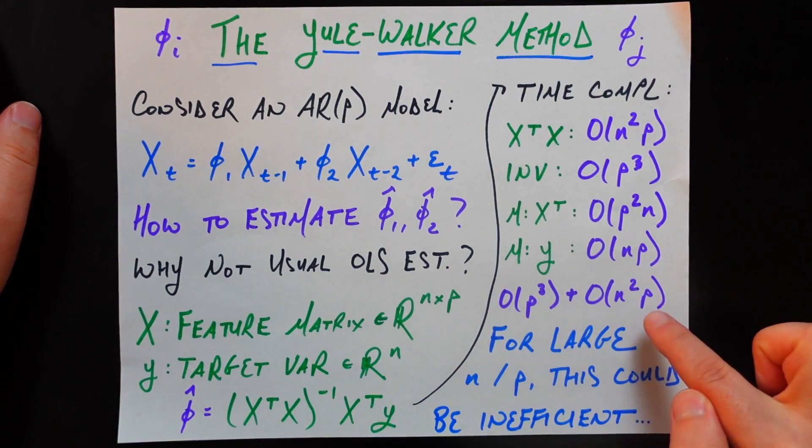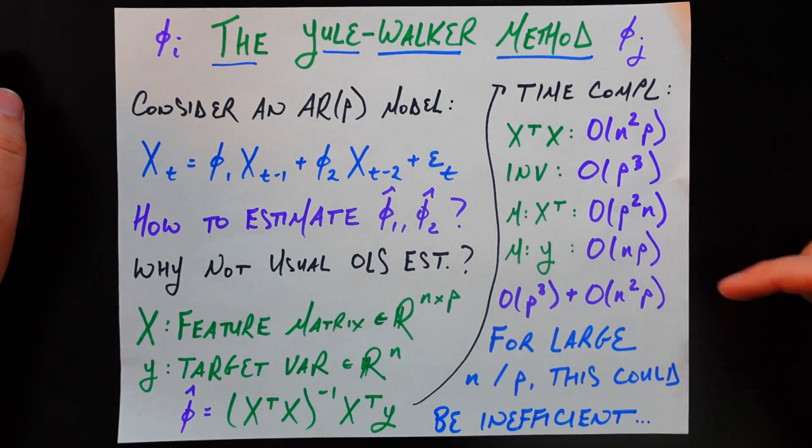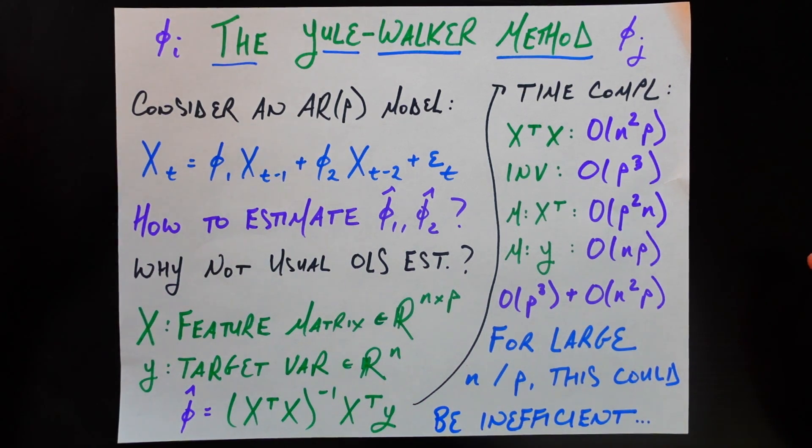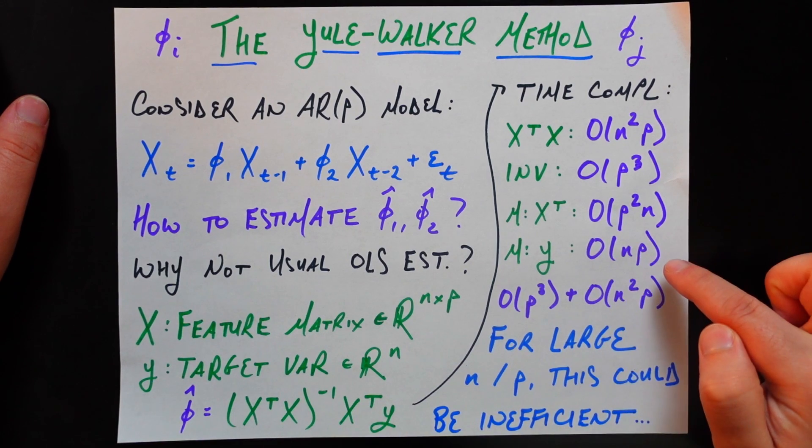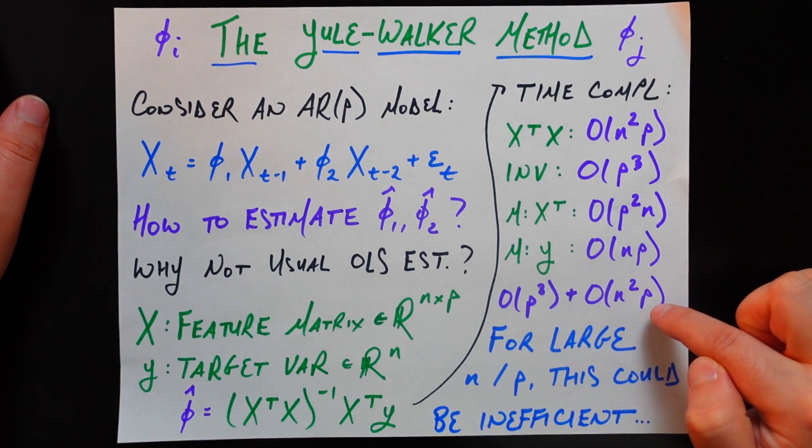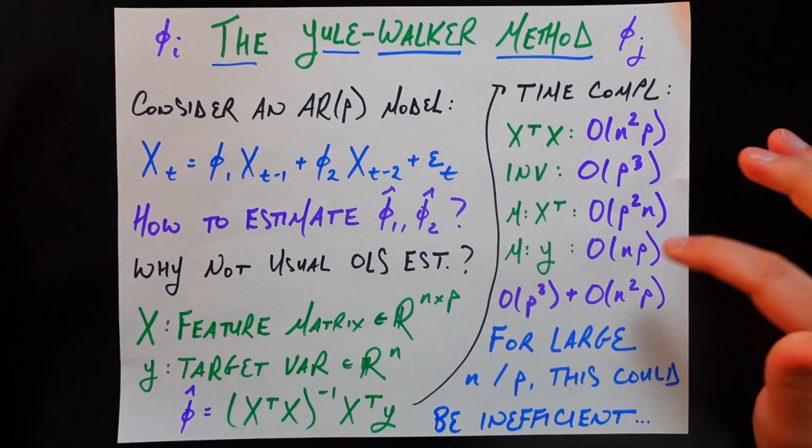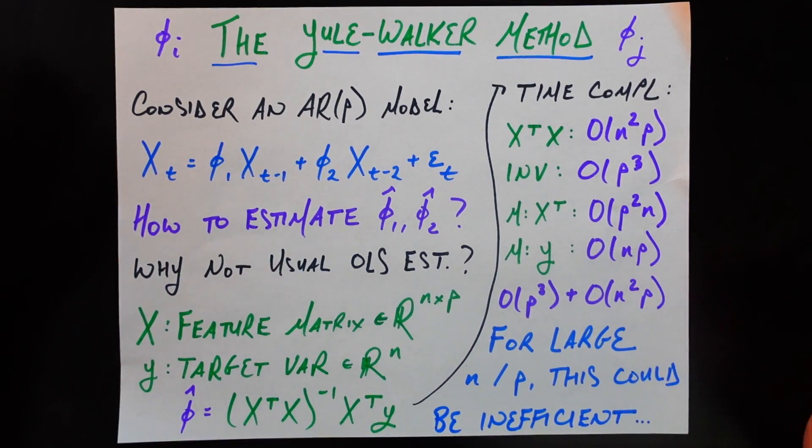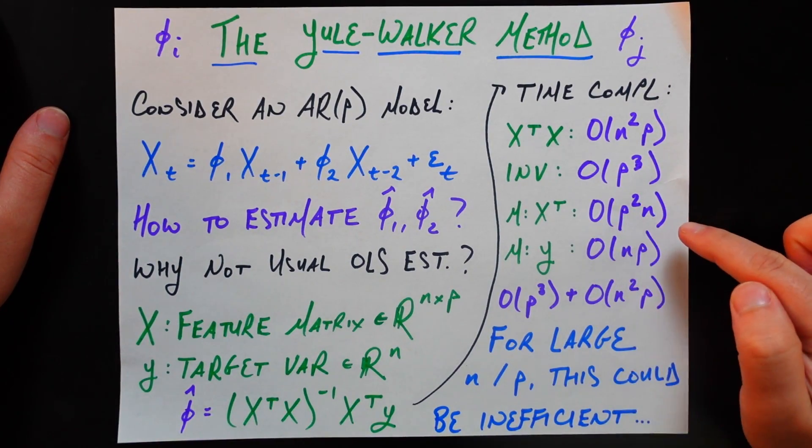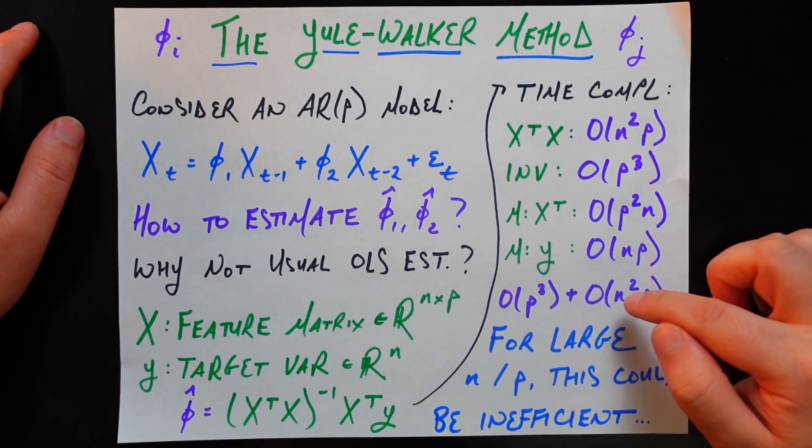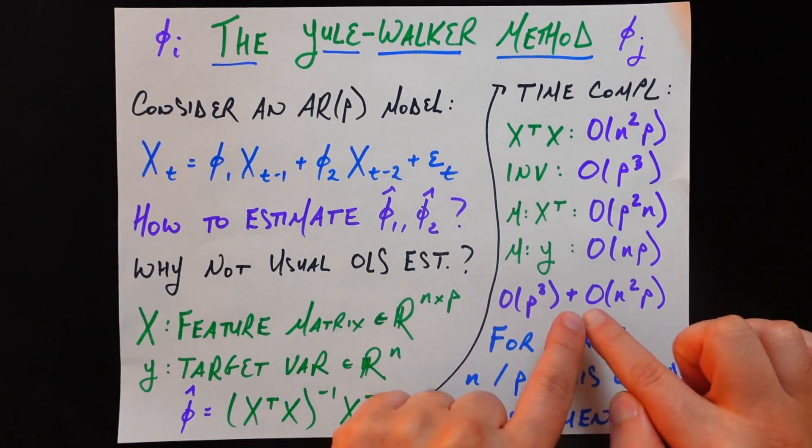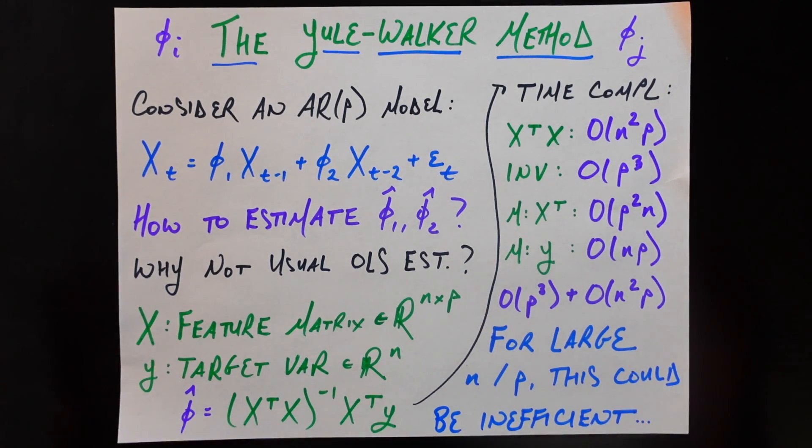So one question you might have is, hey, there's only two terms here, but there's four terms here. That's because two of these terms get dominated under the assumption that N is larger than P. This O(NP) certainly gets dominated by the O(N^2 P) because N squared is bigger than N. So in the limit, NP is going to get dominated by this term. And also O(P^2 N) is going to get dominated by O(N^2 P). Again, under the assumption that N is much bigger than P. So we have this right here as the overall computational complexity.